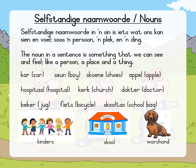Kinders, children. Skool, school. And my absolute favorite, a little Dutch hound — or sausage dog as they call them. In Afrikaans it is the worshond. Now let's see — if we look at these pictures, what do you think they are? Remember, a noun is a place, a person or a thing. So if we look at kinders — children are persons, 'n persoon. A school is 'n plek, a place. And a worshond is a thing, 'n ding.